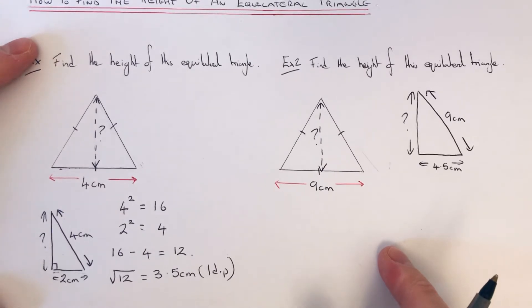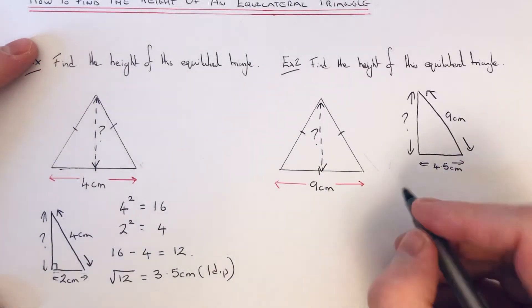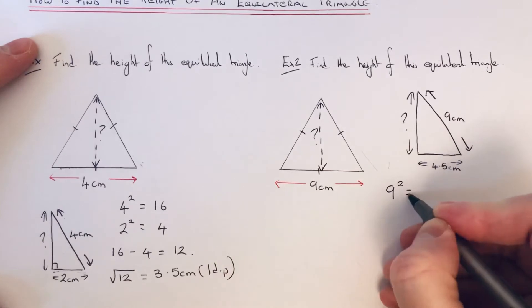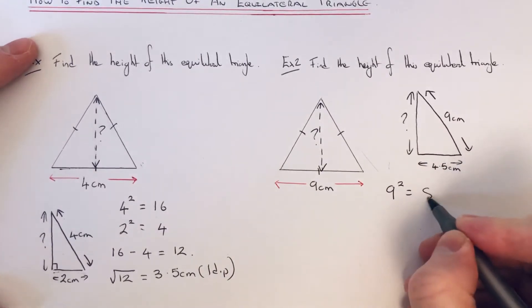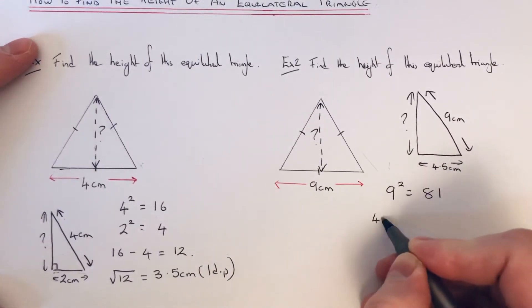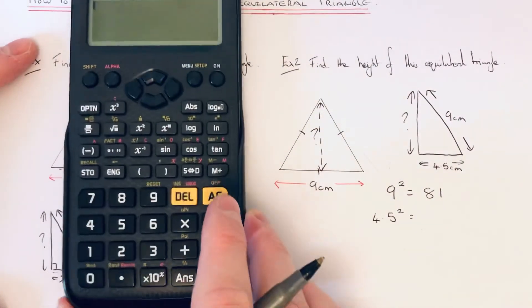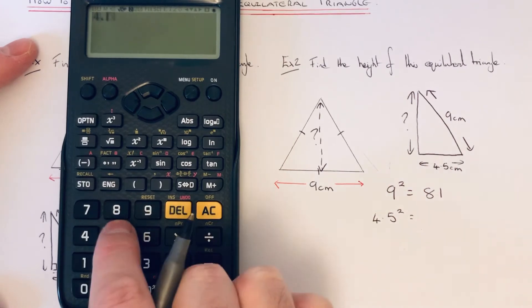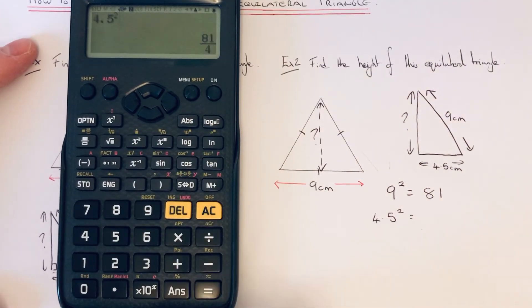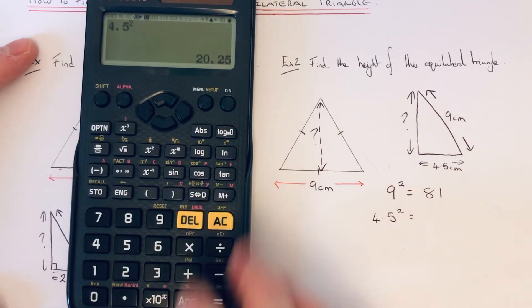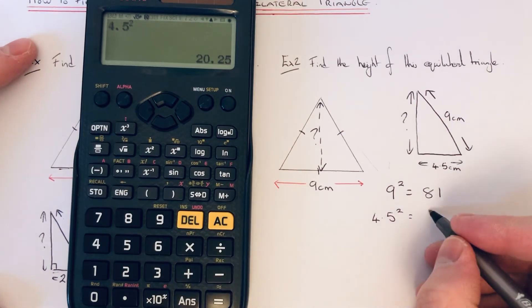So if we square the two numbers that we've got: nine squared is 81, 4.5 squared, you probably need a calculator for this, so 4.5 squared that is 20.25.